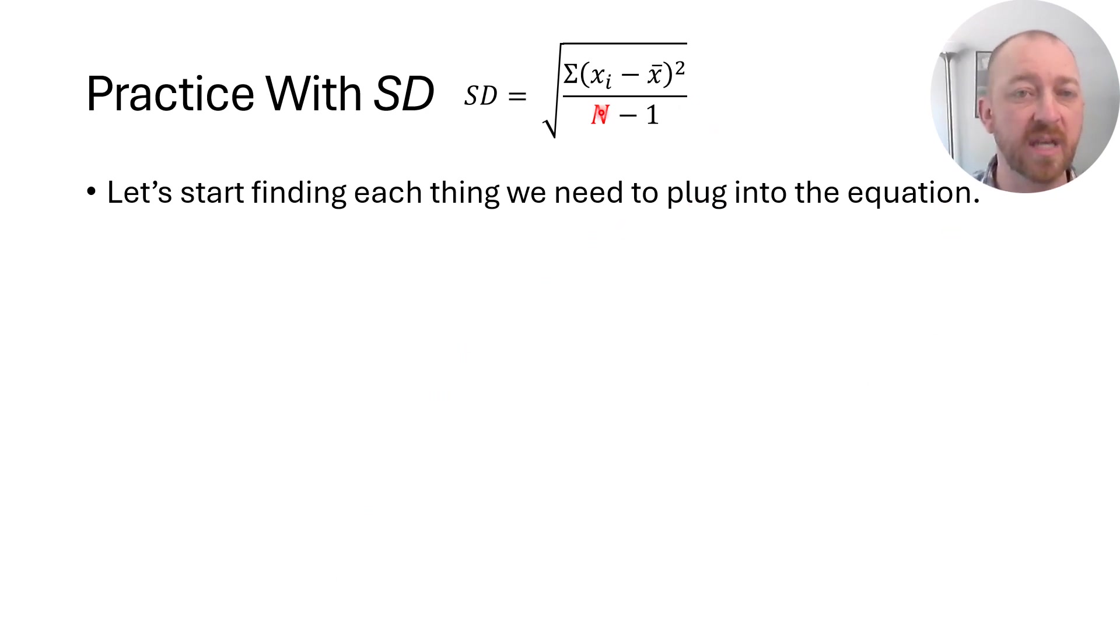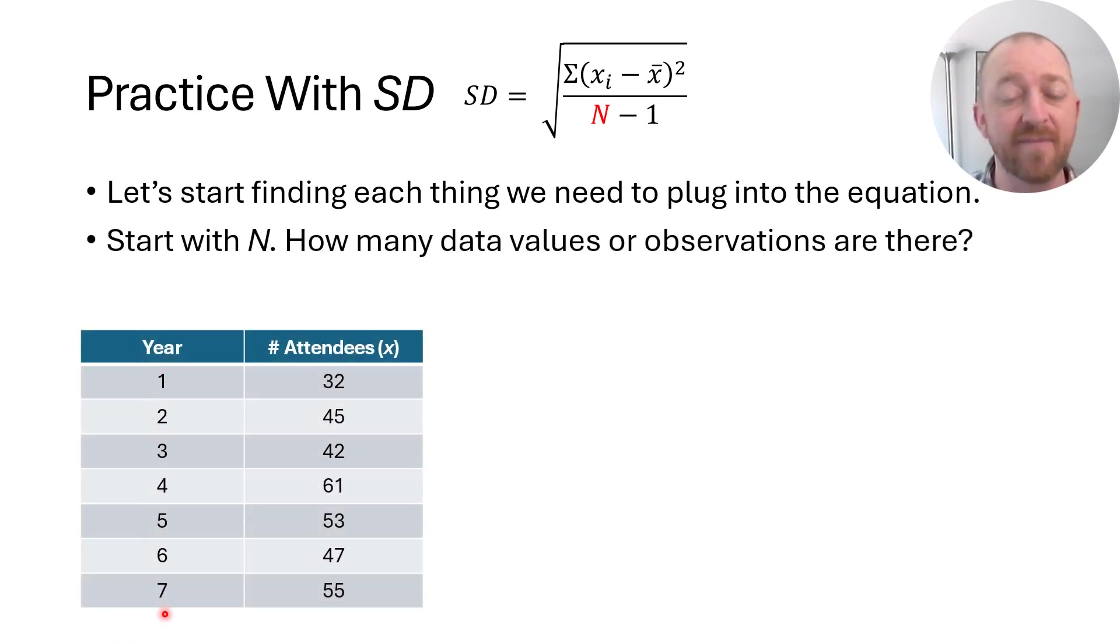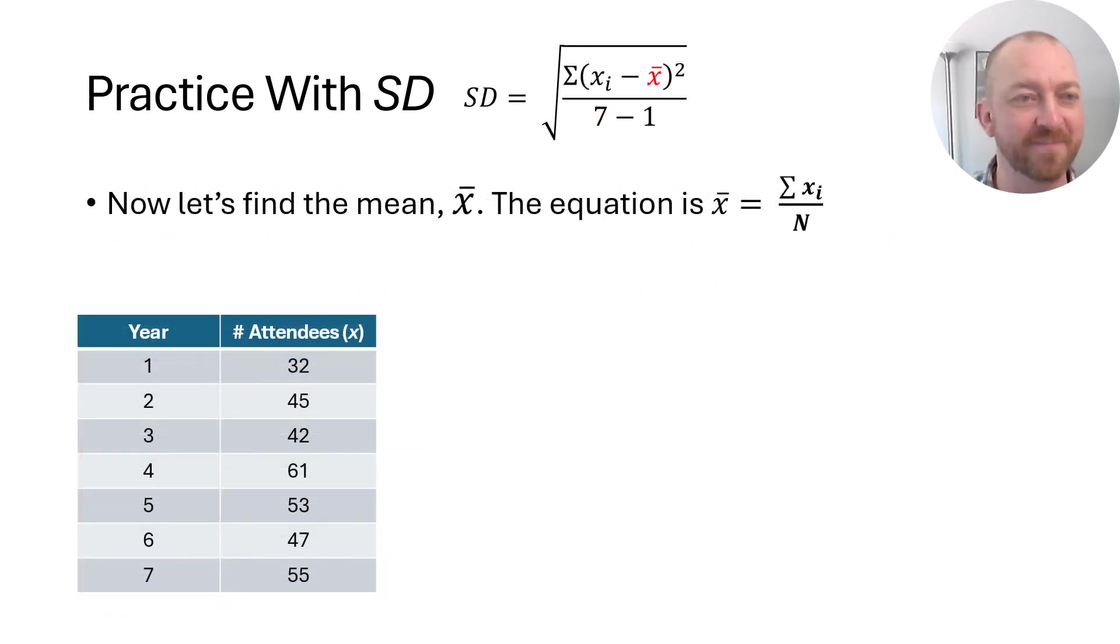Let's say that here's the equation again. So we need to find out lots of things and then plug it into the equation here. The simplest one to use is N, of course. N is the number of observations of the variable. So in other words, it's how many times did we see a value for the variable? The variable in this case is the number of attendees. How many times did we have a number of attendees? In this case, we had seven observations, because there were seven years where we measured the variable. We measured the variable only seven times, therefore N equals seven. That's pretty simple. That's usually the easiest thing to find in any given instance.